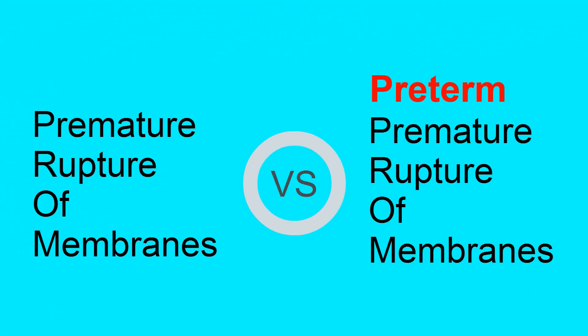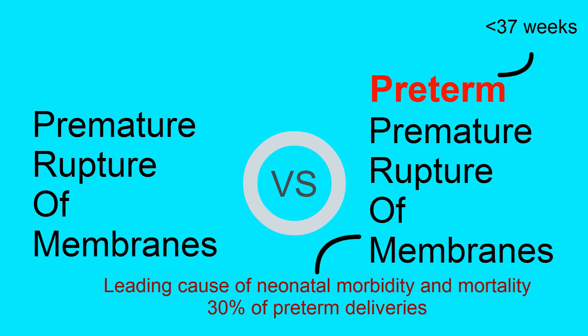PROM is premature rupture of membranes before the onset of labor. PPROM is preterm premature rupture of membranes occurring before 37 weeks estimated gestational age. This is a leading cause of neonatal morbidity and mortality and is associated with 30% of preterm deliveries.